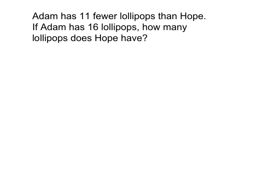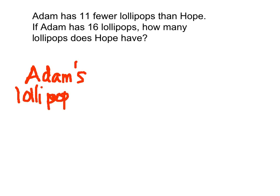So let's label those sections right now. Remember, anytime that you have more than one person and you have to draw another bar, we're going to make sure that the bars line up with each other — right below each other at the starting point. They don't need to go to the very end of each other, but they do need to start at the very same point. So let's first draw Adam's lollipops and Hope's lollipops.